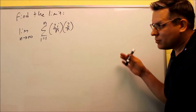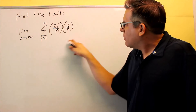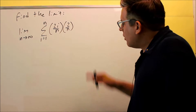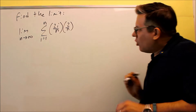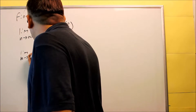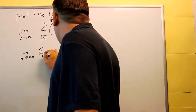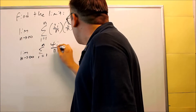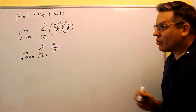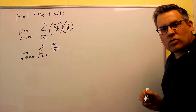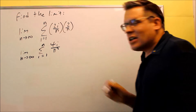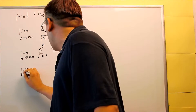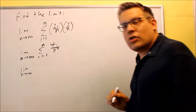We have one more limit problem: n goes to infinity, and we have a summation with n's and i's. First, I'll multiply on the inside to get 4i over n squared. Next, I want to take out everything that is not an i — I can remove it outside of the summation sign, putting 4 over n squared out front. I'm moving it out because it doesn't have the variable i, which is the main variable of the summation.